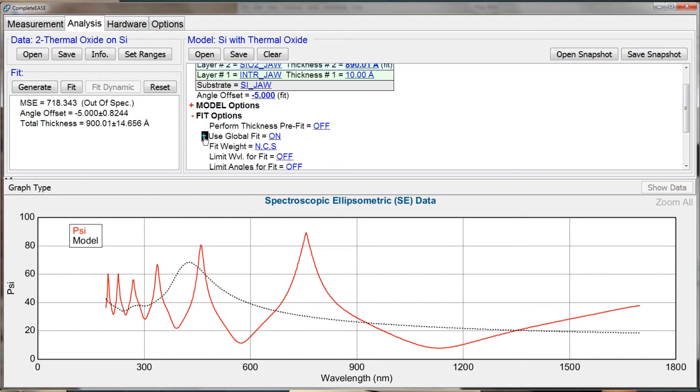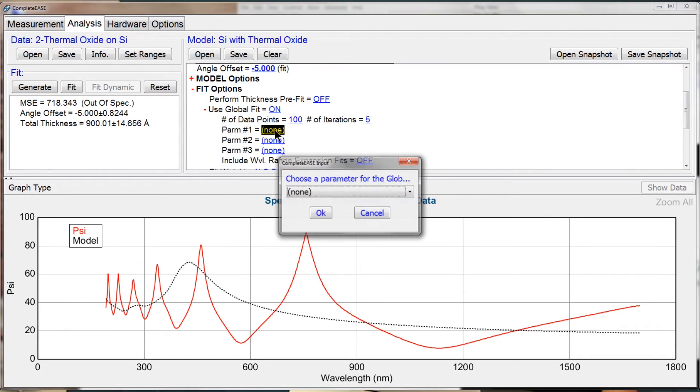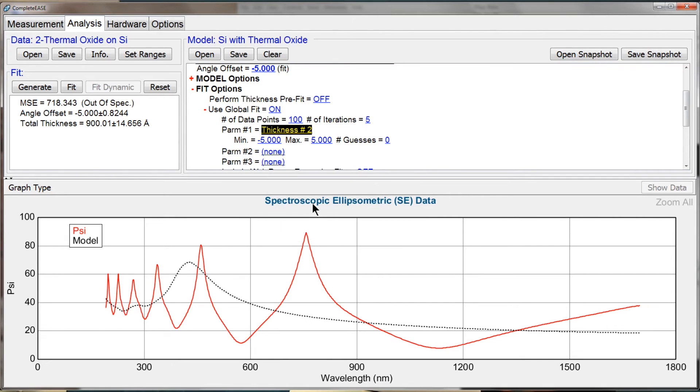And let's expand the global fit. You'll notice it's right below the thickness pre-fit. And when I turn that on and expand it, it allows me to type in the thickness as one of my global search parameters.